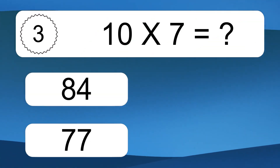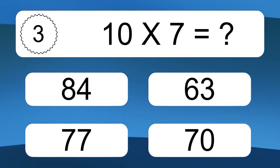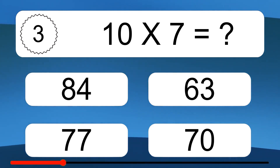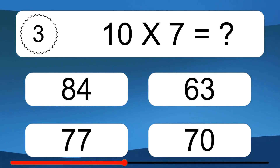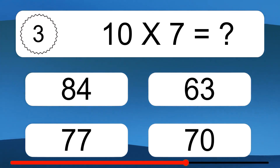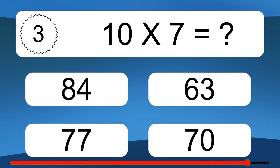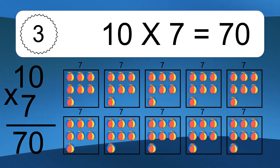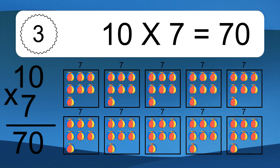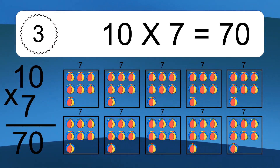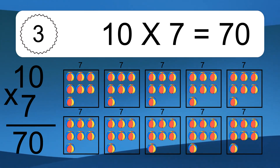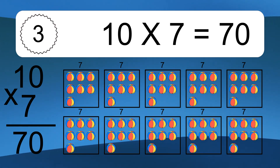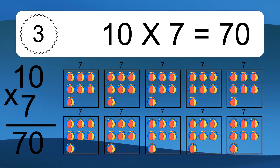10 times 7 equals what? 10 times 7 equals 70. We have 10 boxes, and each box has 7 colorful balls inside. If you count all the balls in all the boxes together, you will have 10 times 7 balls. This equals 70 balls.